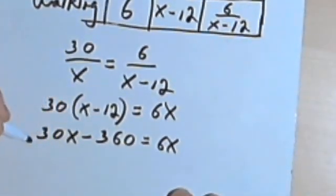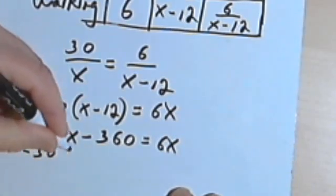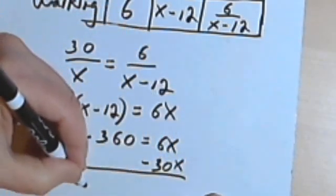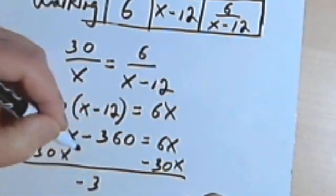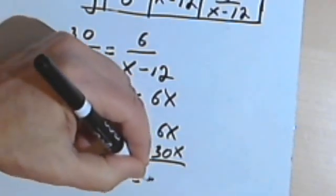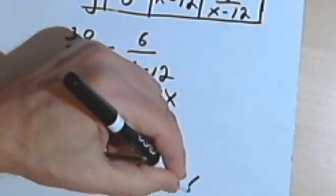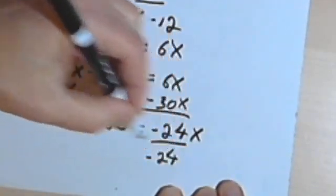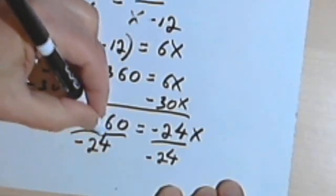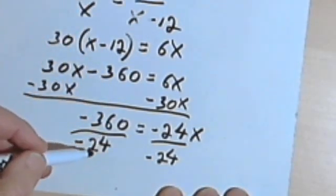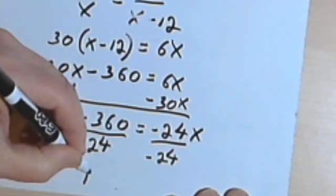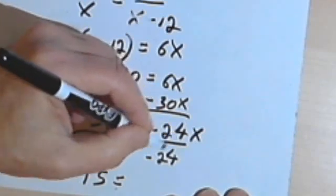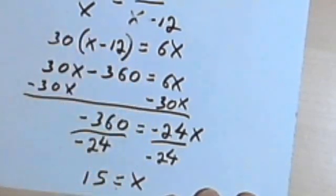I'm going to subtract 30x from both sides and I'll get negative 360 equals negative 24x. And then I want to divide both sides by negative 24. And when I divide 360 by 24, I get 15. Negative 24x divided by negative 24 is just x. So x equals 15.